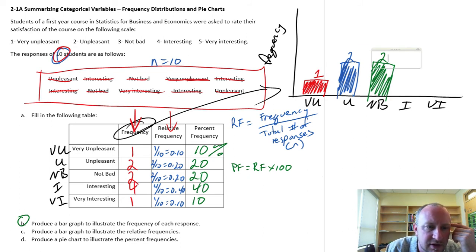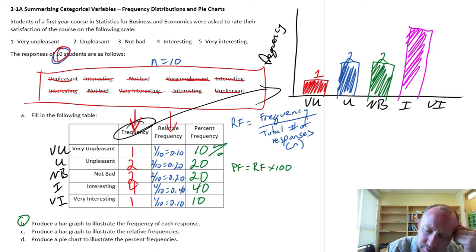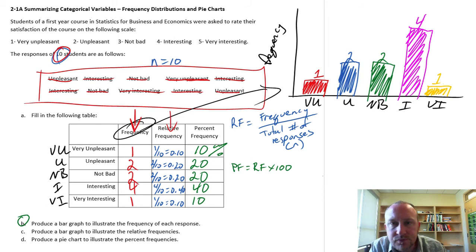Those who found it to be interesting - most, four students. So I'm going to make that twice as tall as my two students. And finally, the very interesting, only one student, so that's about as tall as my first one. Now it becomes much easier to communicate and for somebody else to look at this picture and see that 40% of the students, or most of the students, seem to find it to be quite interesting. We can combine these and say five students found it to be at least an interesting course.